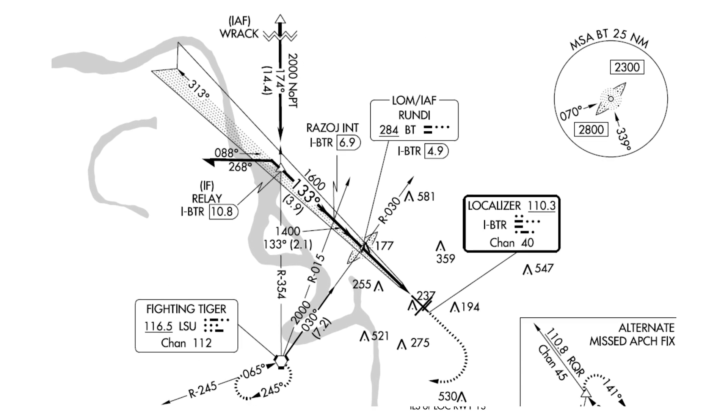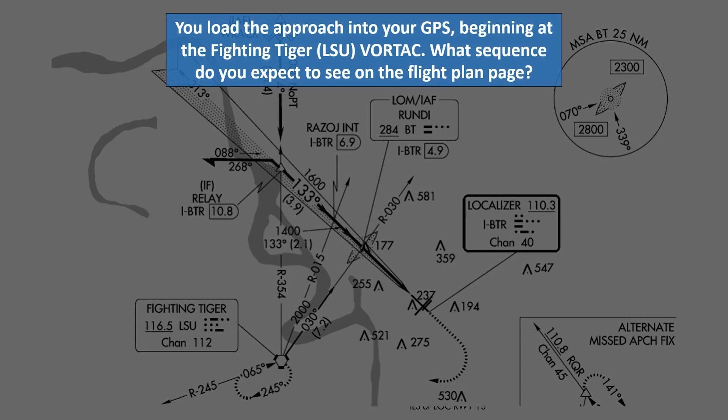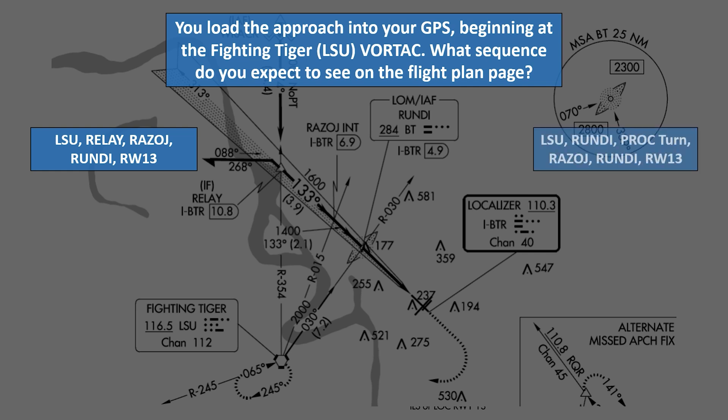Here's the first question. You load the approach into your GPS, beginning at the Fighting Tiger VORTAC. What sequence do you expect to see on the flight plan page?